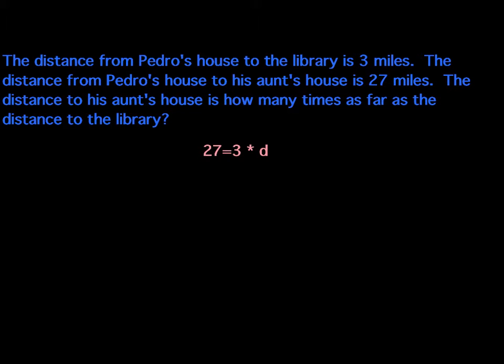What are we trying to find? We're trying to find how many times as far as the distance to the library, as far as his aunt's house goes. So we know his aunt's house is 27 miles from Pedro's house. So that's where this 27 comes in. And we know that the distance from Pedro's house to the library is three miles. So that's where we got the three.